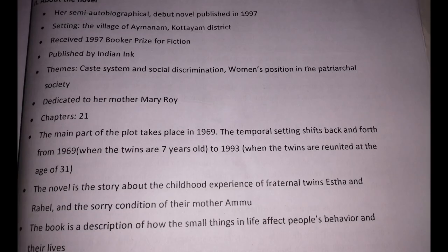Now let's see about the novel in detail. It is her semi-autobiographical debut novel published in 1997 — don't forget the year. The setting is the village of Aymanam, Kottayam district in Kerala. She received the Booker Prize in 1997 for this fiction. The major themes of this novel are the caste system and social discrimination, and women's position in the patriarchal society.